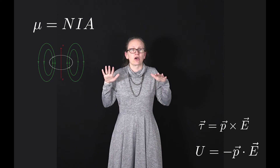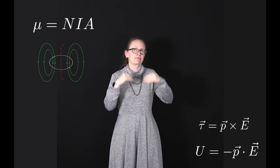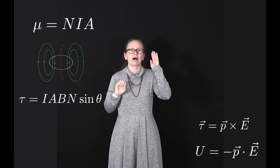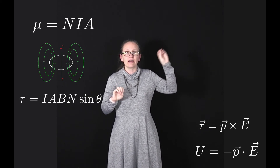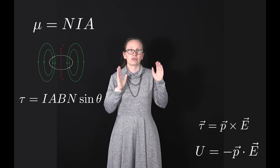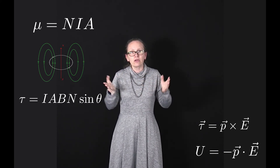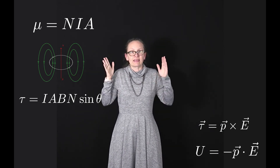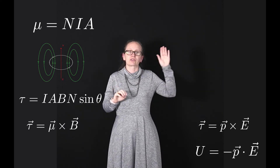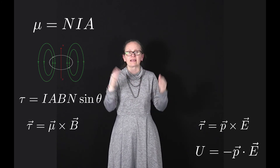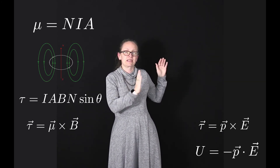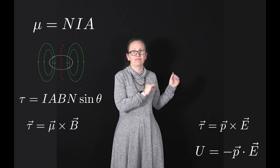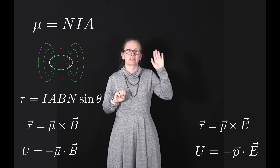We've previously seen the torque on a current-carrying loop when considering motors. The torque was given by torque equals i·A·B·n times sine theta, where theta is the angle between the normal to the loop and the magnetic field. Using our expression for mu equals n·i·A, we can see this is equal to mu cross B. When we rotate a magnet in a magnetic field we change its potential energy, so the potential energy of a magnetic dipole moment in a magnetic field is given by U equals minus mu dot B.